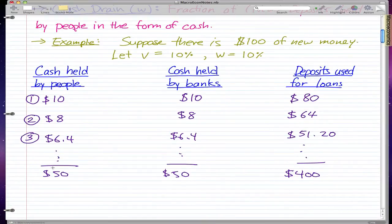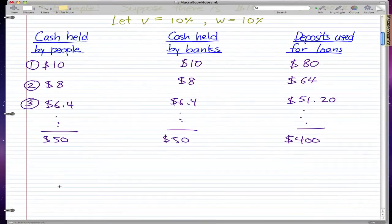Now I'm going to give you a formula that helps you calculate the same $500 without going through this long process. This formula is called change in money supply. The formula is 1 over V plus W, and you take that and times it by the new money.